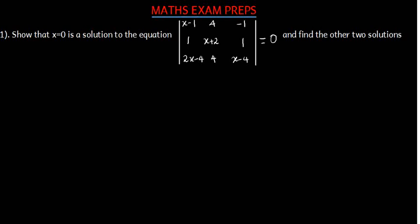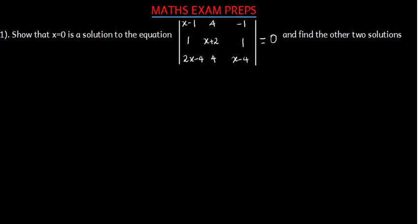We'll go over other questions. Show that x equals 0 is a solution to the equation, and find the other two solutions. How are we able to show that x equals 0 is a solution? Well, if we've been given an equation like this, this is a matrix, so we need to find the determinant. The determinant of this matrix should give us x being equal to 0.